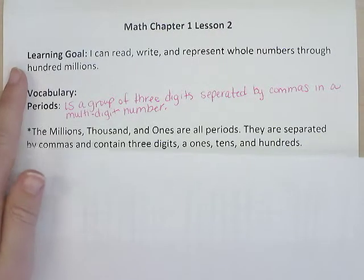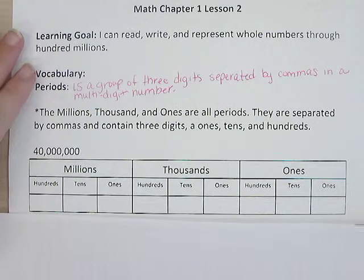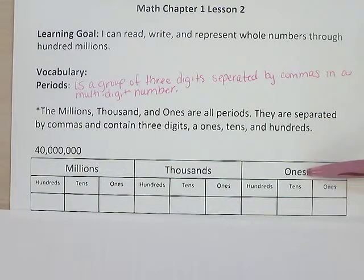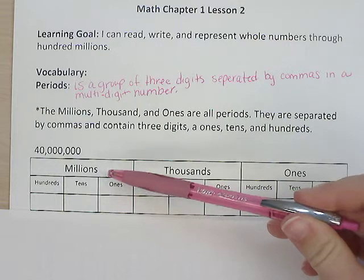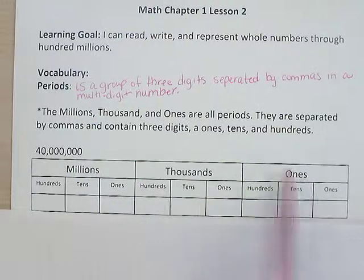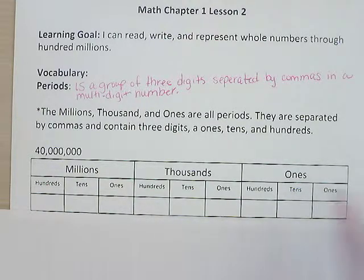And so what we have here below that is you have the millions, thousands, and ones are all periods. They are separated by commas and they contain three digits, a ones, a tens, and a hundreds. So if you were to go down a little bit you're going to see these periods on your place value chart. Now this place value chart is something that you've seen before. So what we have is we have the ones period, the thousands period, and the millions period. Do you see how you can see the group of three digits in the ones? There's three groups in thousands and three groups in the millions. And when you write numbers you separate these periods with commas and you've seen this before.